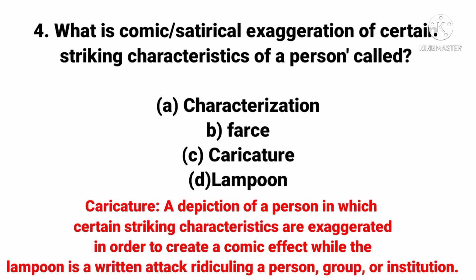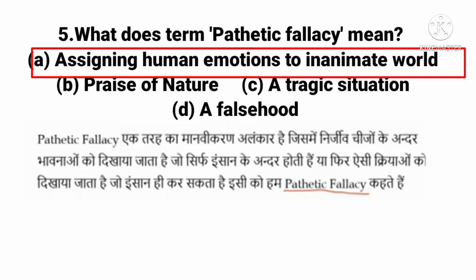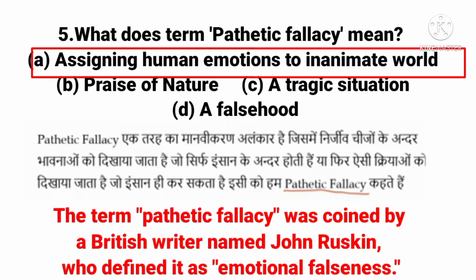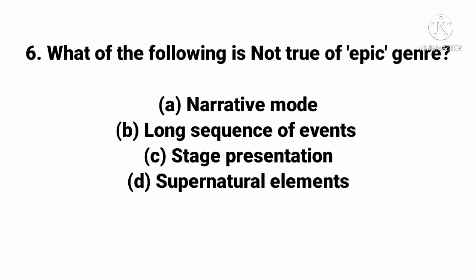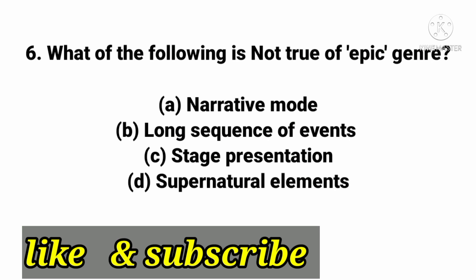The next question: What does the term 'pathetic fallacy' mean? The right answer is assigning human emotions to the inanimate world. Pathetic fallacy is a literary device where non-living things are given human-like feelings or actions. The term was coined by British writer John Ruskin, who defined it as 'emotional falseness.'